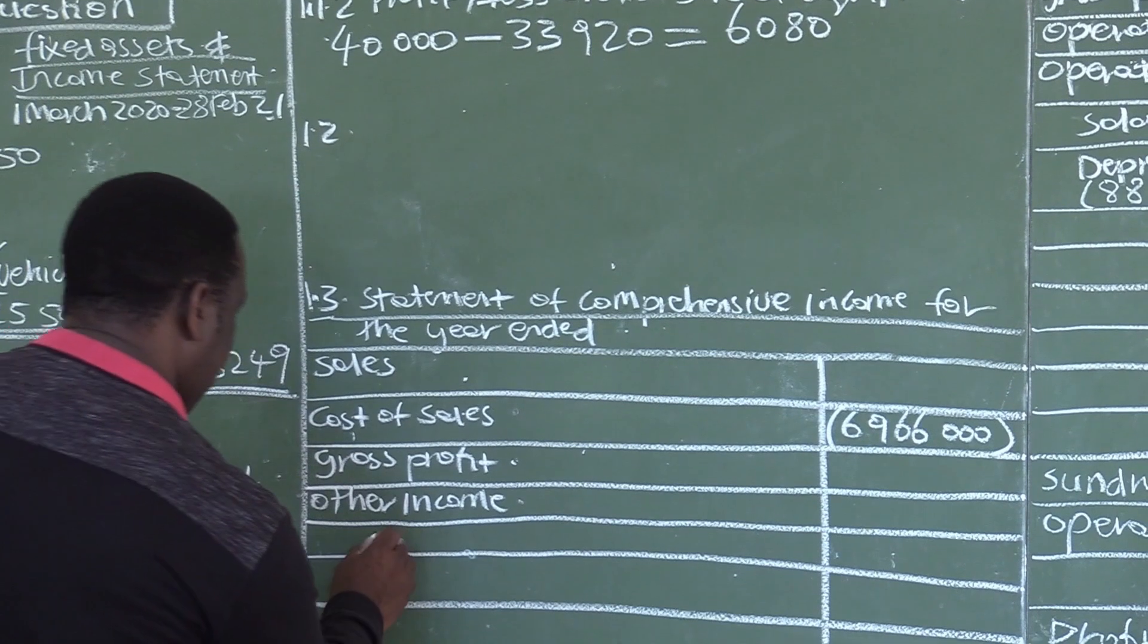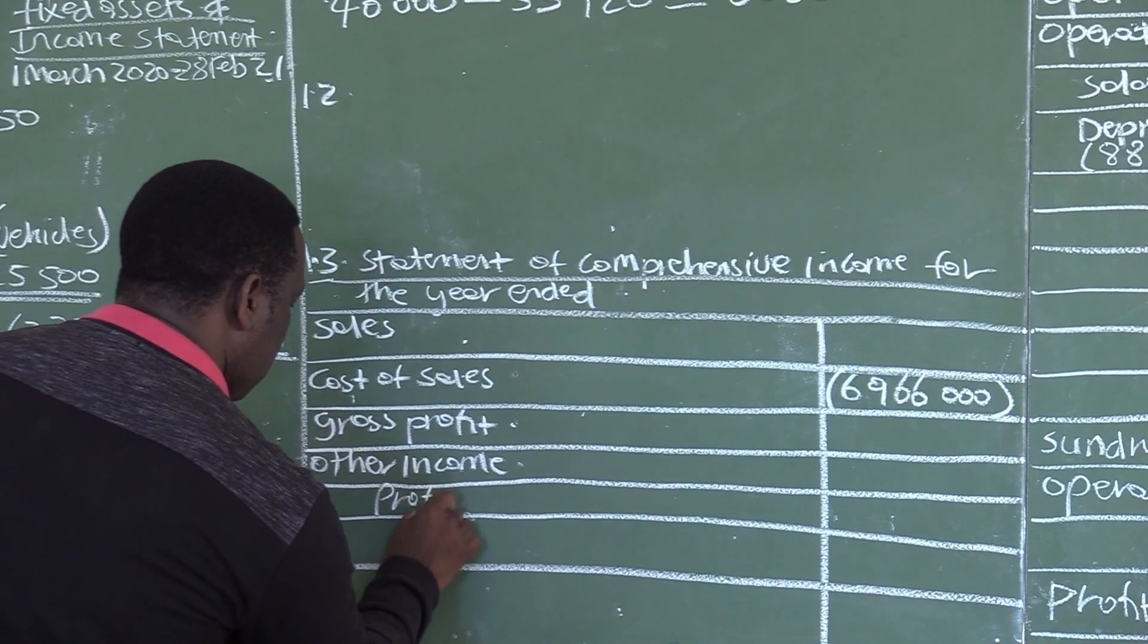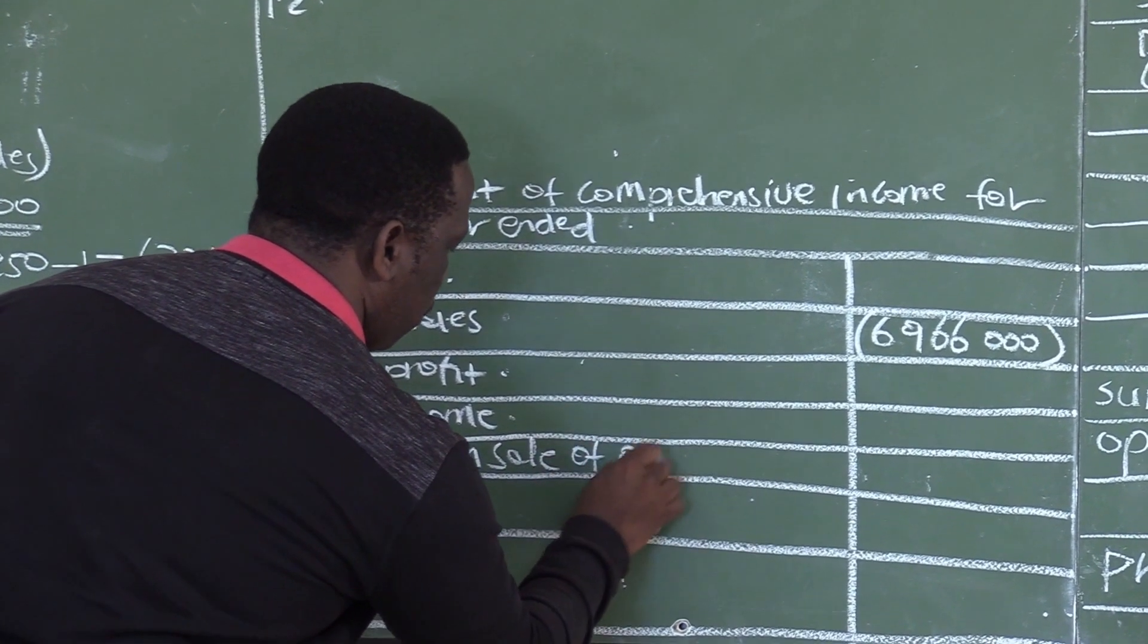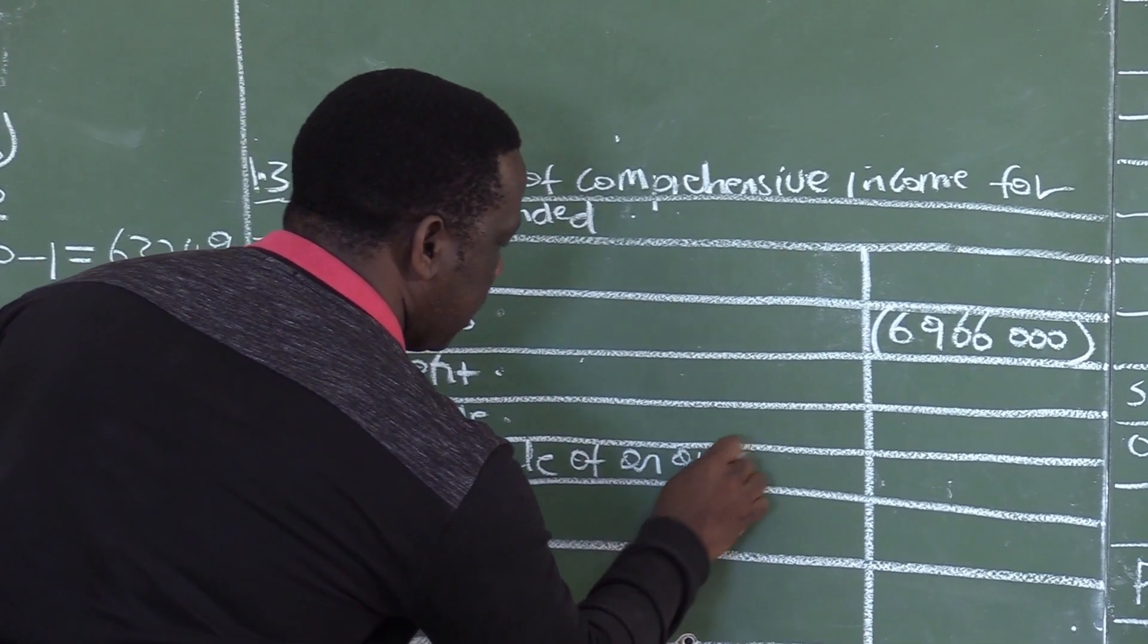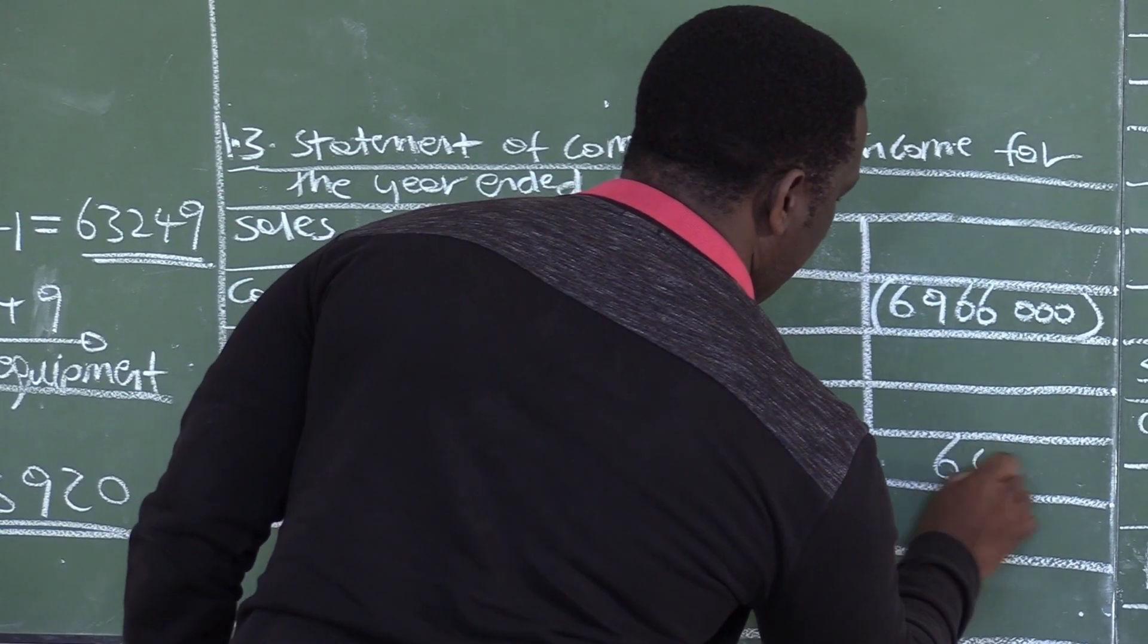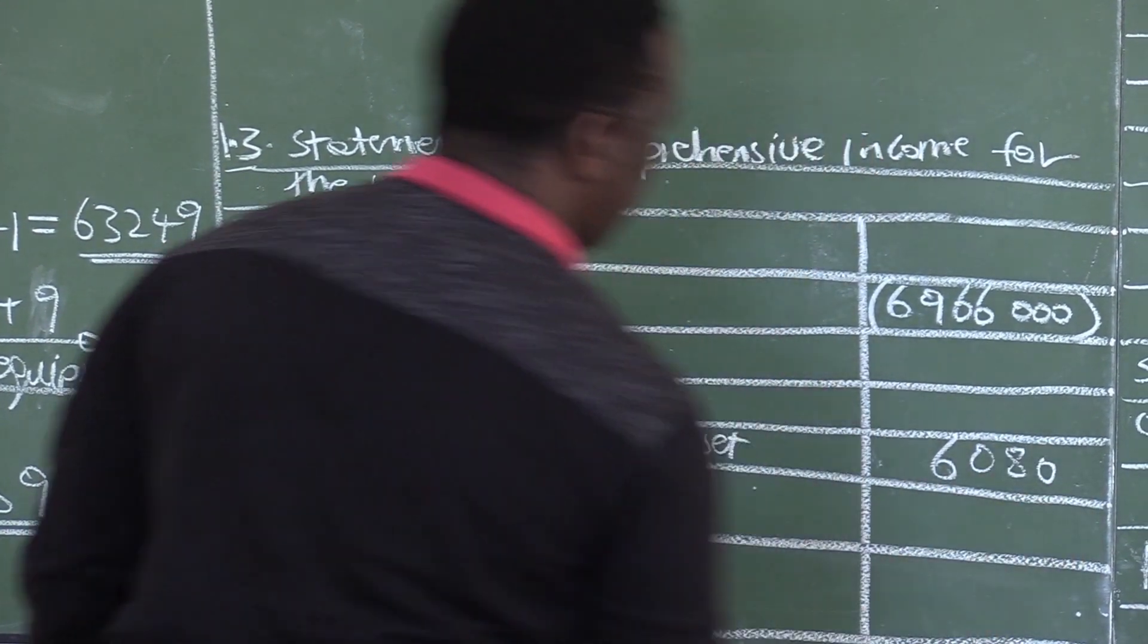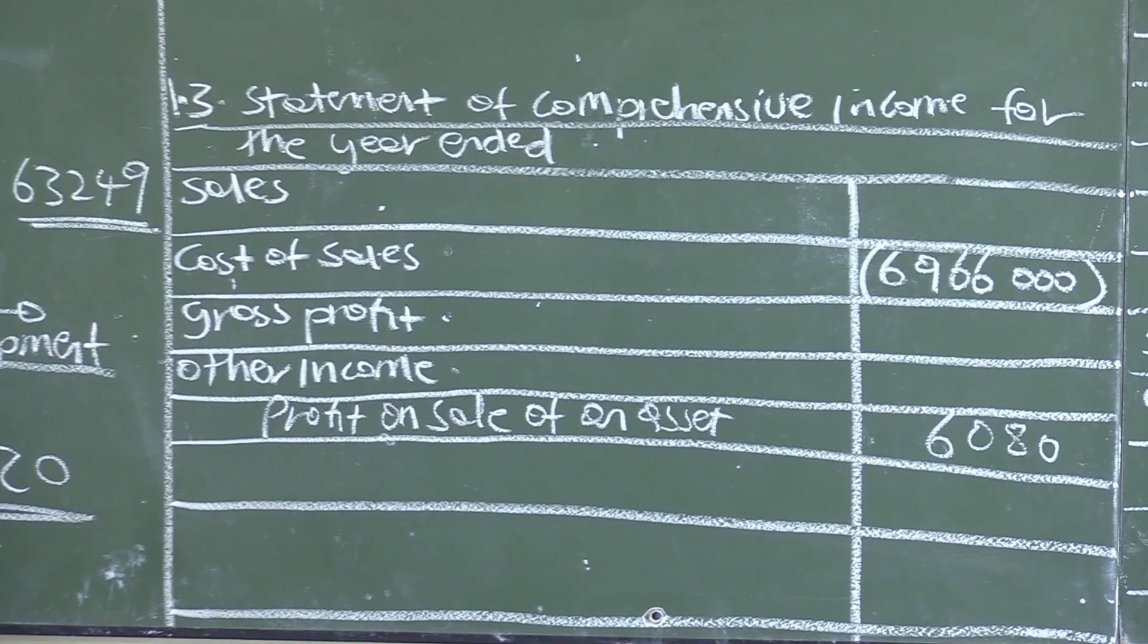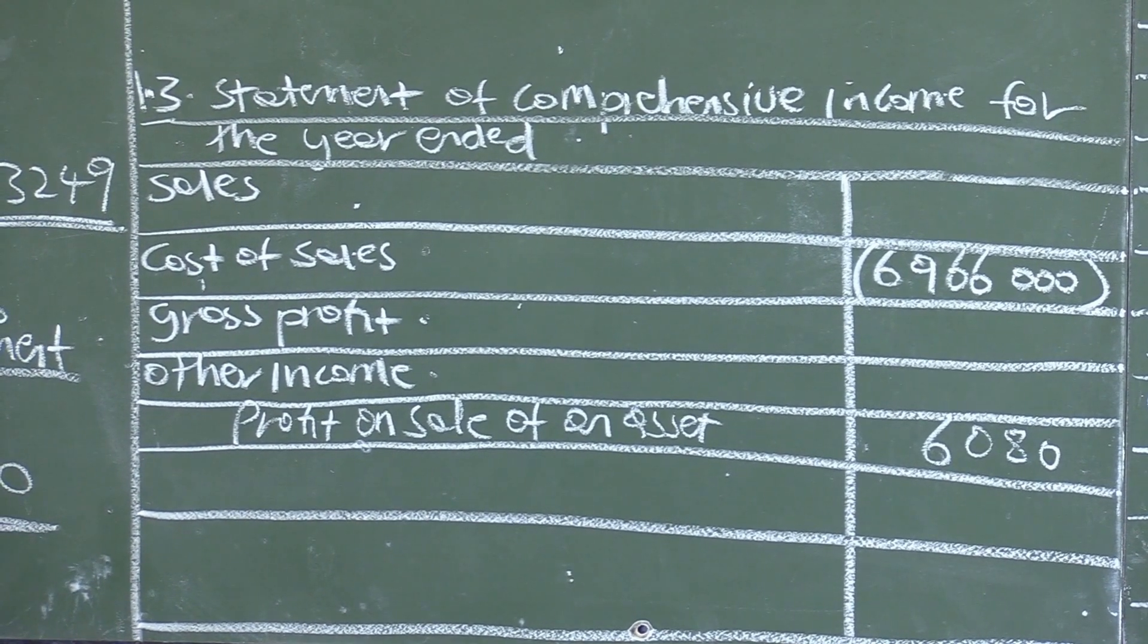So under your other income, you have profit on sale of an asset. This profit is 6,080. It's an income to the business. Under other income, this is an income to us of 6,080.